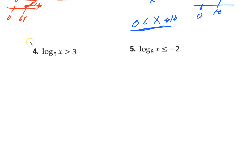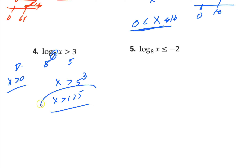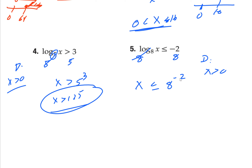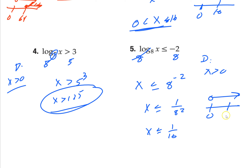Let's do these two. First: domain is x greater than 0. Solve it — here's your base, take 5 to both sides, so x is greater than 5 to the third, which is 125. So x greater than 0 and x greater than 125 — the answer is just x greater than 125. Second one: domain is x greater than 0. Solve: x is less than or equal to 8 to the negative 2. A negative exponent just flips it, so that's 1 over 8 squared, meaning x is less than or equal to 1 over 64. Graph it: open circle at 0, closed circle at 1/64 — you're in between those two answers.